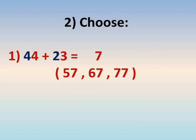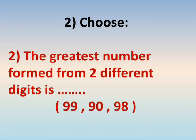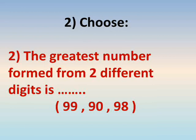Number two: choose one. 44 plus 23. Units plus units: four plus three — in my mind after four, five, six, seven. And tens plus tens: four plus two — in my mind with two on my fingers, after four, five, six. The answer is sixty-seven.